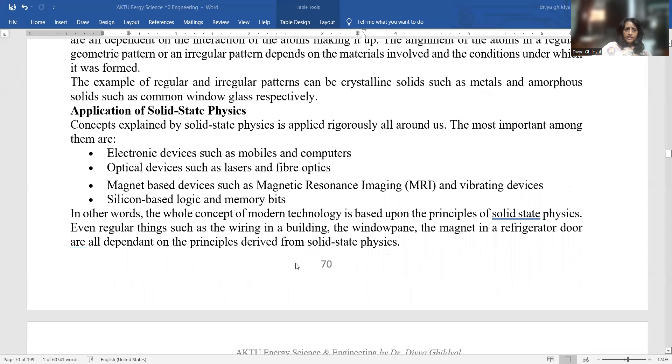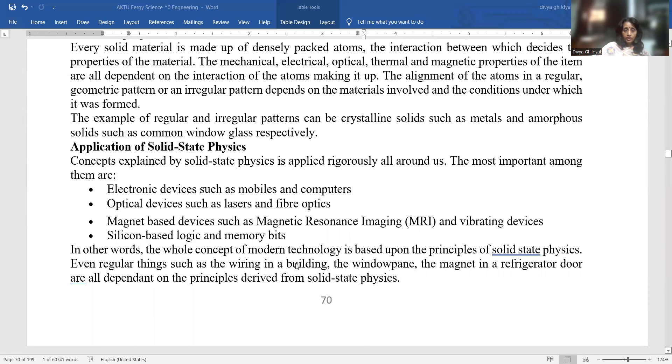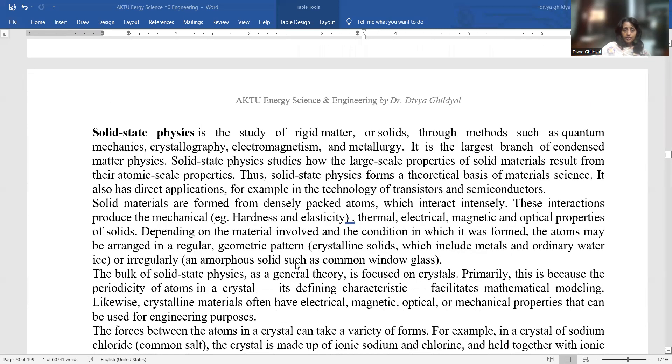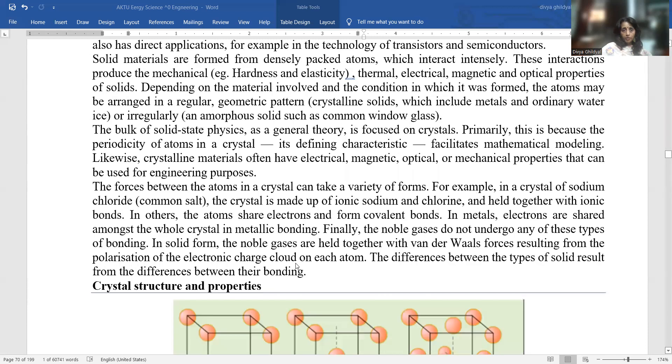Solid state physics will also play a big role in energy science because the most important solid state application you can see is the study of rigid matter of solids through methods such as quantum mechanics, crystallography, electromagnetism, and metallurgy. It is the largest branch of condensed matter physics. Solid state physics studies how the large-scale properties of solid material result from their atomic scale properties.